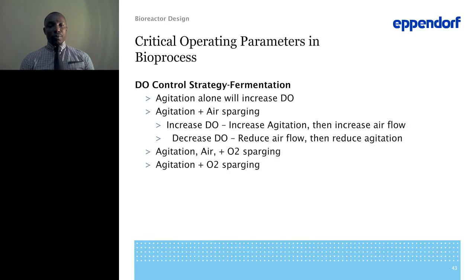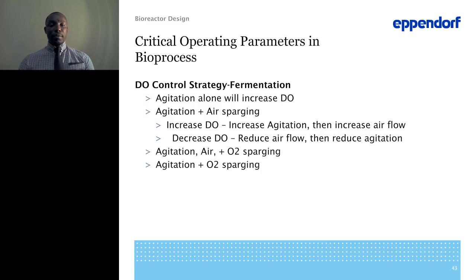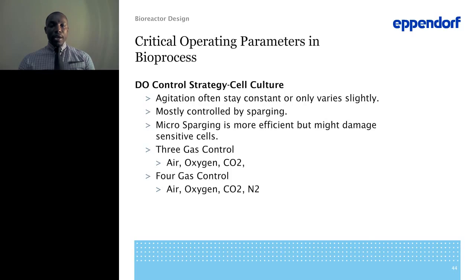The DO control strategy for fermentation: agitation alone will increase DO, so at the start of most fermentation processes the goal is to ramp up agitation to maintain DO. As your OD increases and you're struggling to maintain DO, you then start sparging air to maintain that set point. When air reaches its maximum output and is unable to maintain the DO set point, you supplement that by sparging in oxygen as well. This method is primarily used for fermentation.